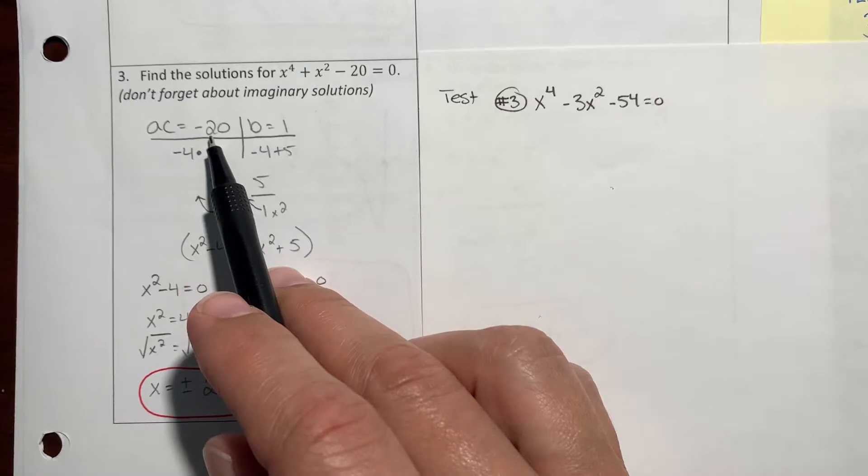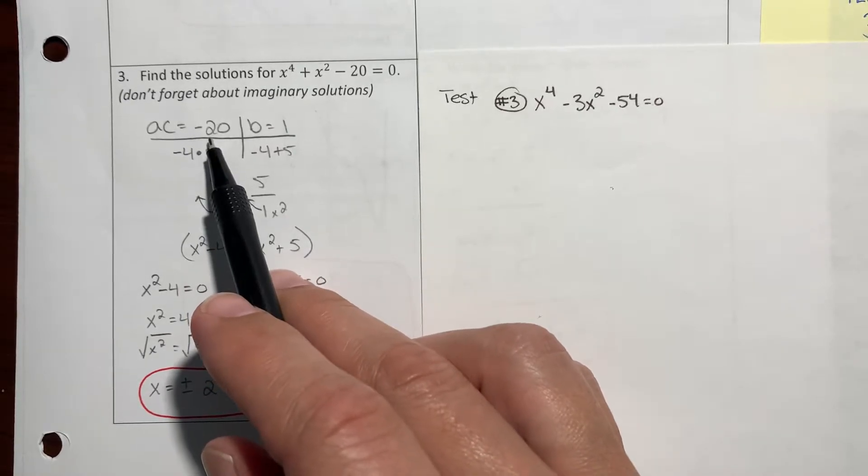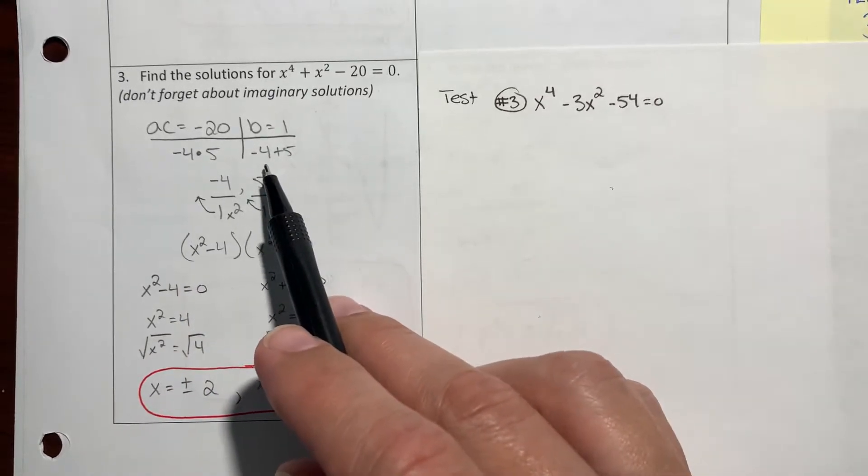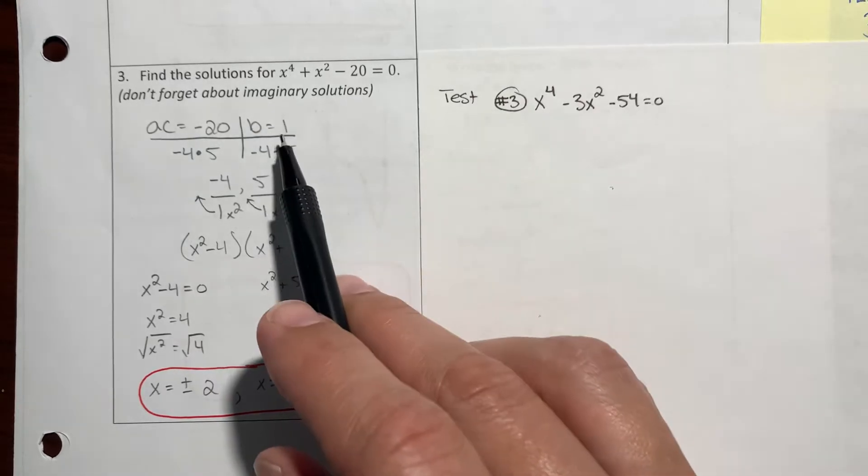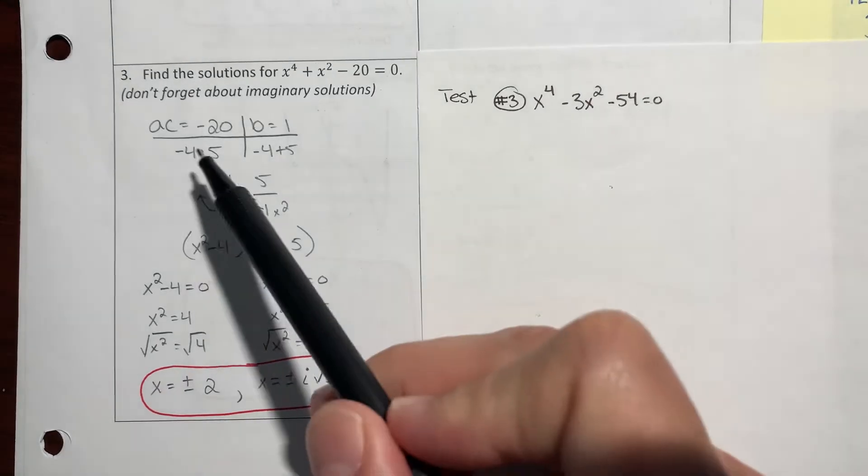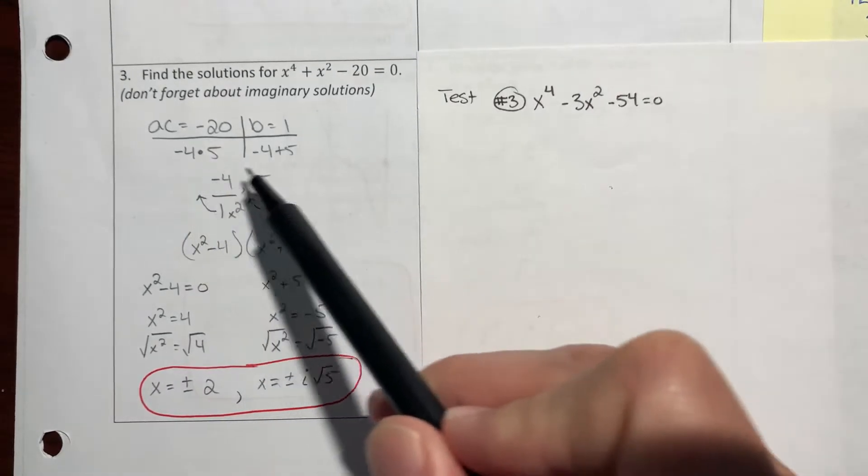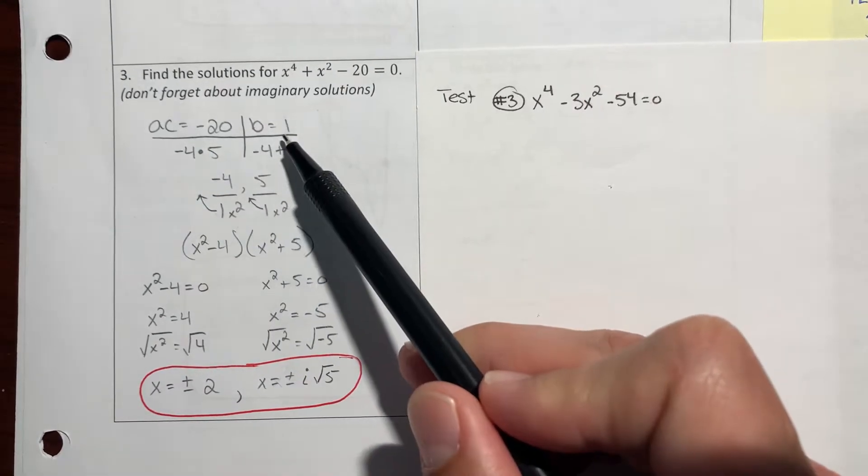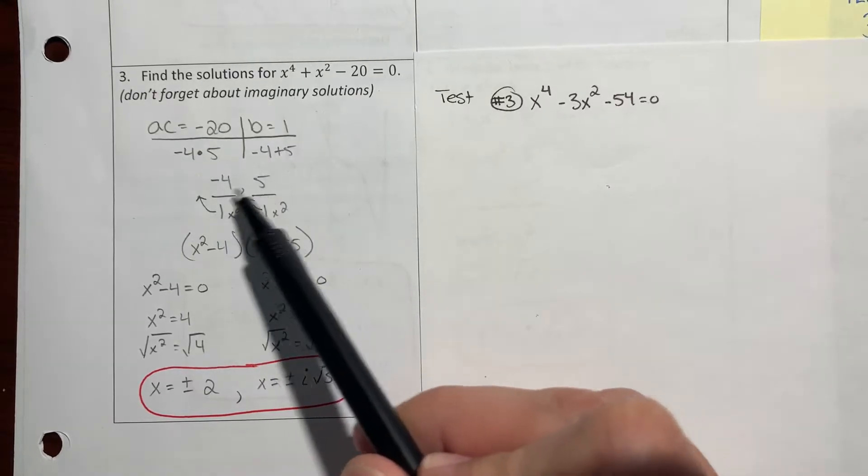The factors of negative 20 that multiply to equal negative 20, but if I added those same two numbers they would equal the 1 that's in the middle. We can see that I got negative 4 and 5 because negative 4 times 5 is negative 20, and negative 4 plus 5 is 1. So I use those two factors.